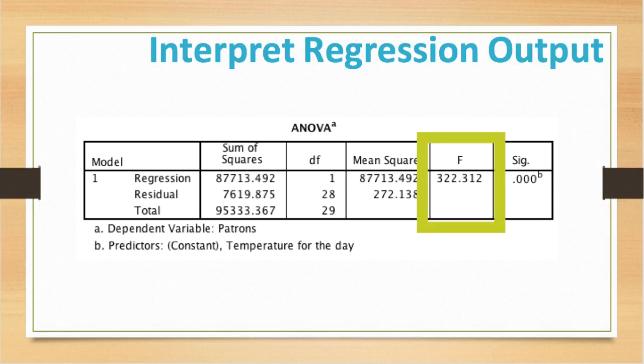Next, we are going to examine the ANOVA table, which is also known as the analysis of variance. The ANOVA table indicates that the model can accurately explain variation in the dependent variable. The ANOVA table shows the various sums of squares and the degrees of freedom associated with each.